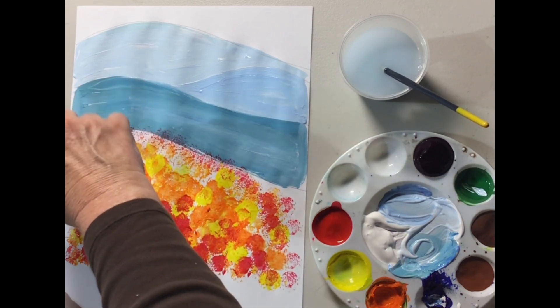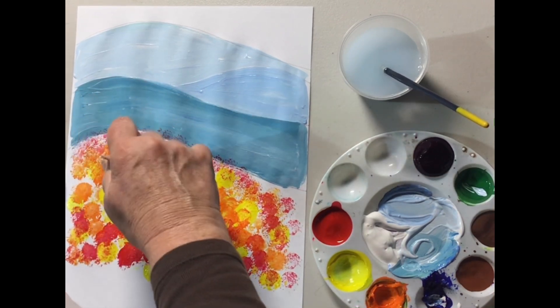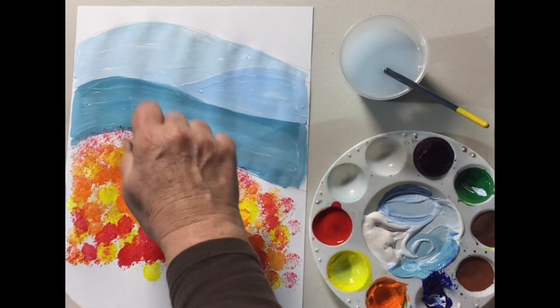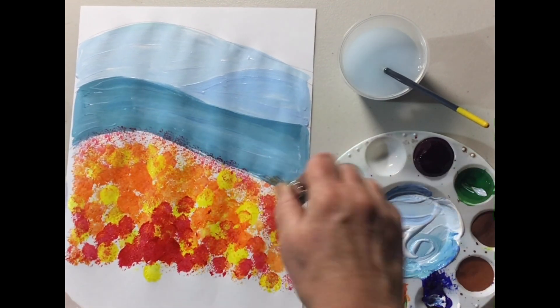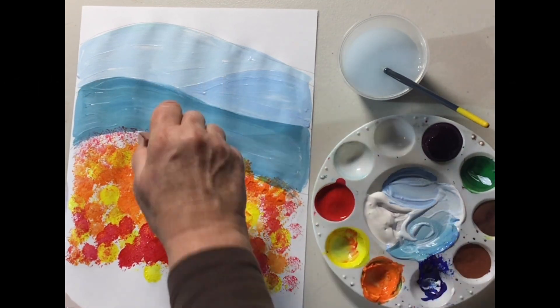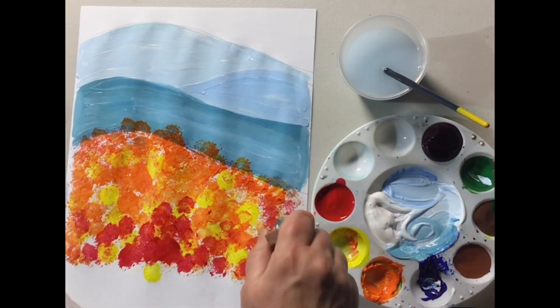Let's go near the mountains. Now I'm going to go back and forth with my warm colors: orange, yellow, and red. Kind of mix some more. Just go back and forth. You're going to mix a little bit and that's okay.